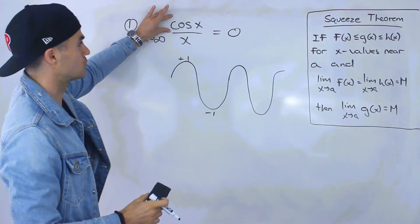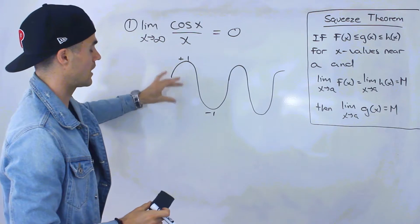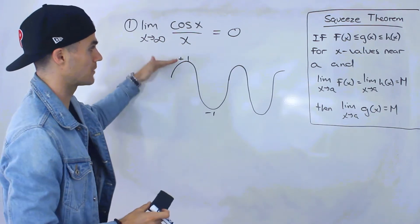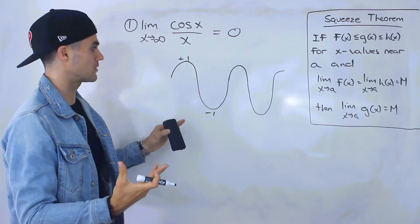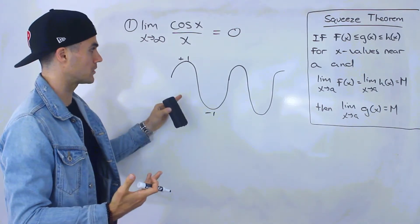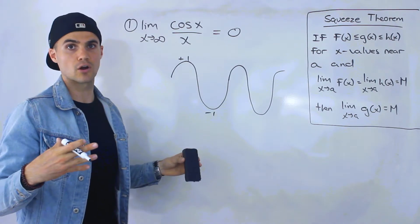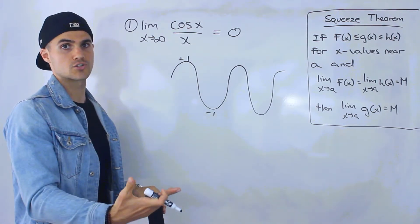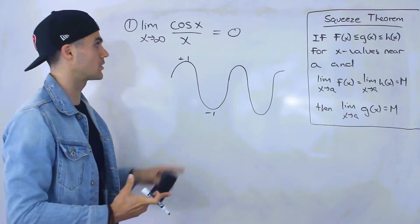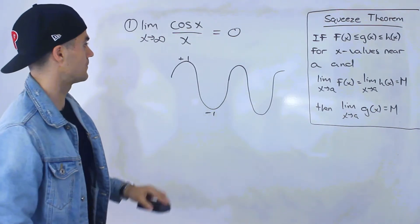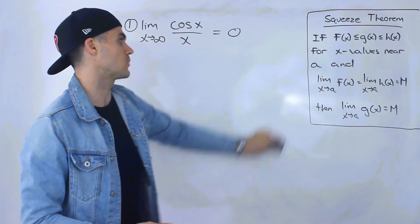The numerator is never going to be out of the range between negative one and positive one — pretty small numbers — but the denominator is going to be a very large number as x gets larger. A small number over a very large number is going to go towards zero. The question is how do we show that in a nice way? We can use the squeeze theorem.